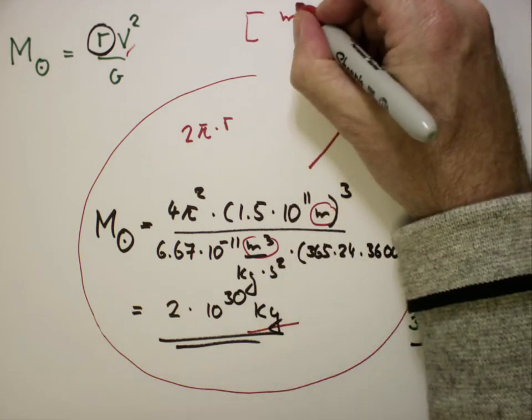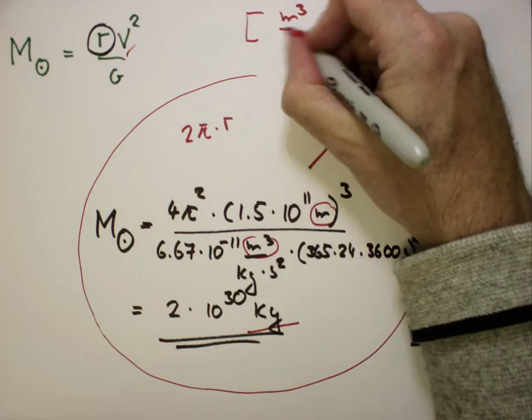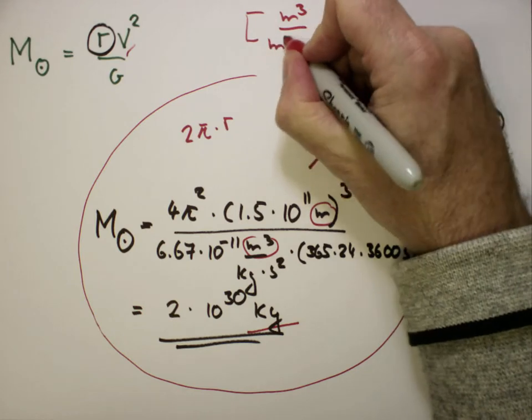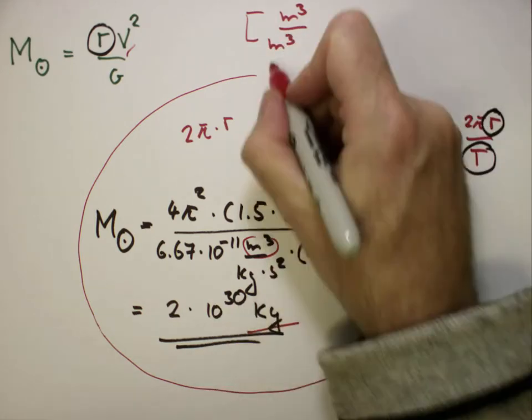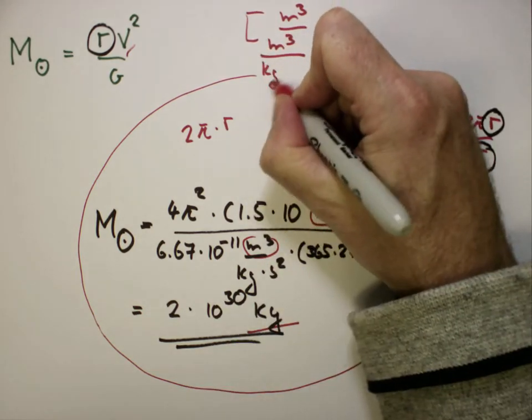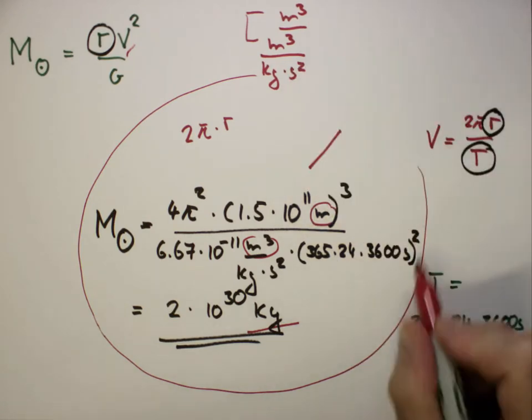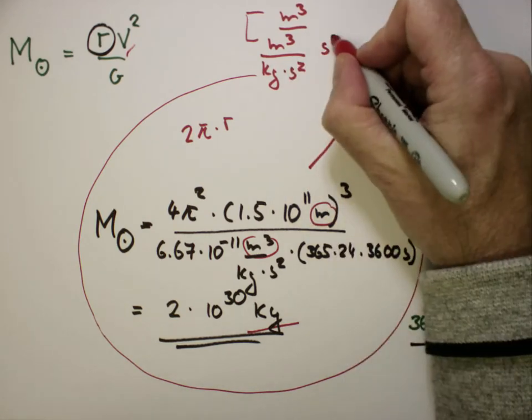We've got m cubed, divided by m cubed, divided by kilogram second squared. And there's another second squared there.